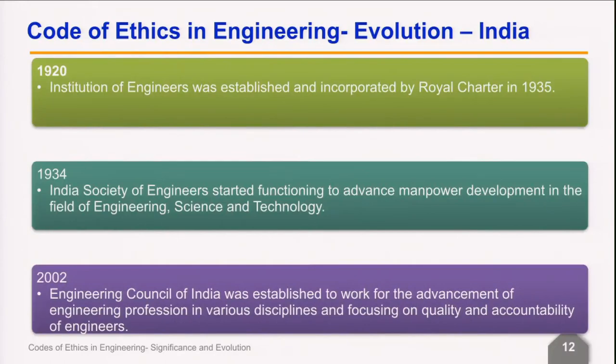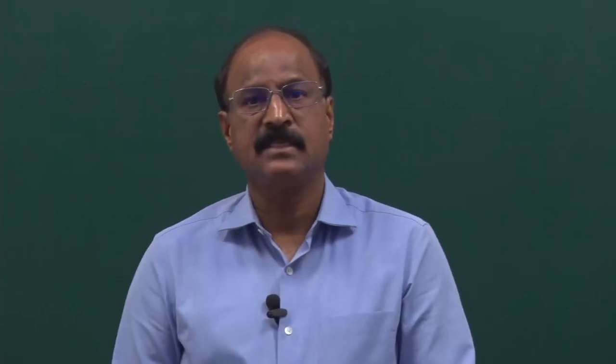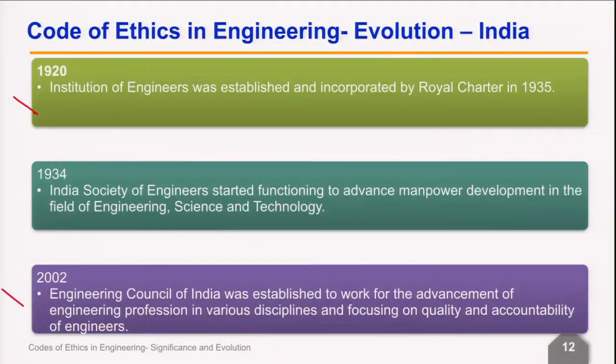Let us look at the scenario of engineering societies in India and how they correlate with ethics. In 1920, the Institution of Engineers was established and incorporated by royal charter in 1935. This is the first major code in India. One of its services includes inculcating and promoting amongst engineers and technologists a growing commitment to the social objectives of the profession. The Indian Society of Engineers started functioning in 1934 to advance manpower development in engineering, science and technology. The Engineering Council of India is another society which came up in 2002, established to work for the advancement of engineering profession in various disciplines while focusing on quality and accountability of engineers.